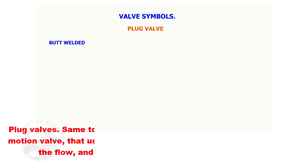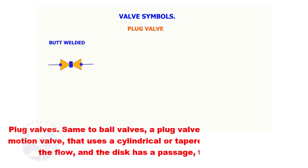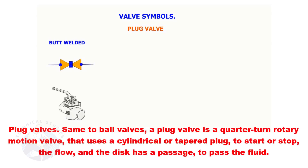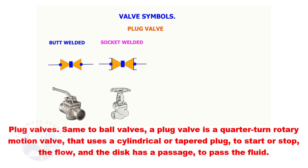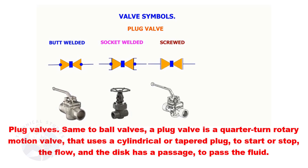Plug Valve. Same as ball valves, a plug valve is a quarter turn rotary motion valve that uses a cylindrical or tapered plug to start or stop the flow, and the disc has a passage to pass the flow and is in plug shape.